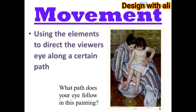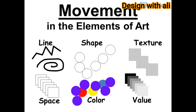Movement means using the elements to direct the viewer's eye along a certain path. What path does your eye follow in this painting? Movement applies to the elements of art: line, shape, texture, space, color, and value.